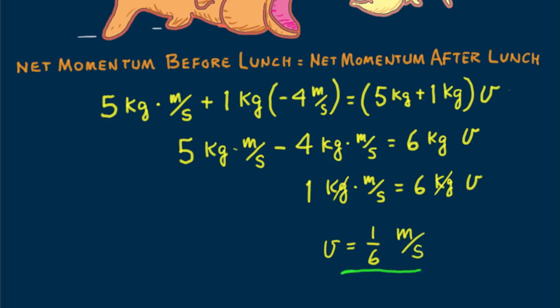What happens here is the negative momentum of the small fish effectively slows the large fish after lunch.